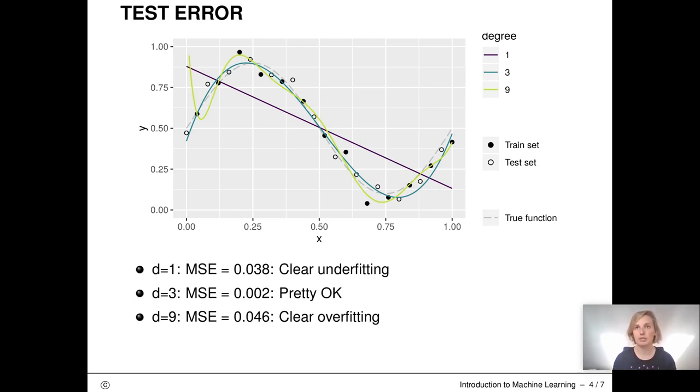The linear model in purple is clearly not a good option, so that's when d is one. The model with a degree of three seems to be pretty fine from both the figure and the mean squared error. The blue line looks fairly similar to the gray line which shows the true underlying structure.